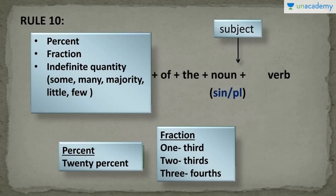Here is rule number 10. This rule is about percent, fraction and indefinite quantity. Percent is basically a specified amount for every hundred, and you can simply express it as 20%, 30%, 90%, etc.